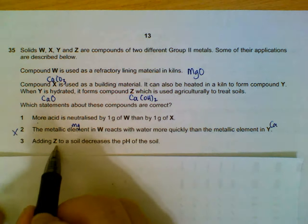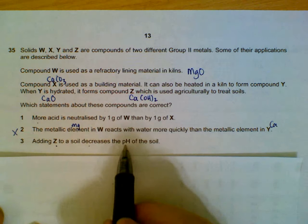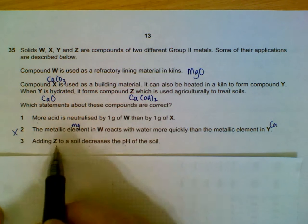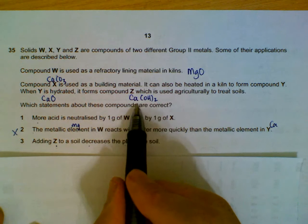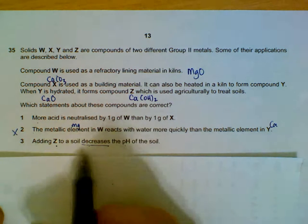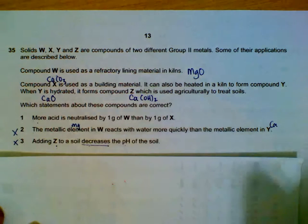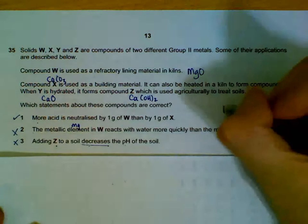Statement 3: adding Z to soil decreases pH. No, Z is calcium hydroxide, which is supposed to increase the pH of soils. It neutralizes soils that are too acidic and pulls the pH up, so it increases pH. Three is not correct. Only statement 1 is correct, option D.